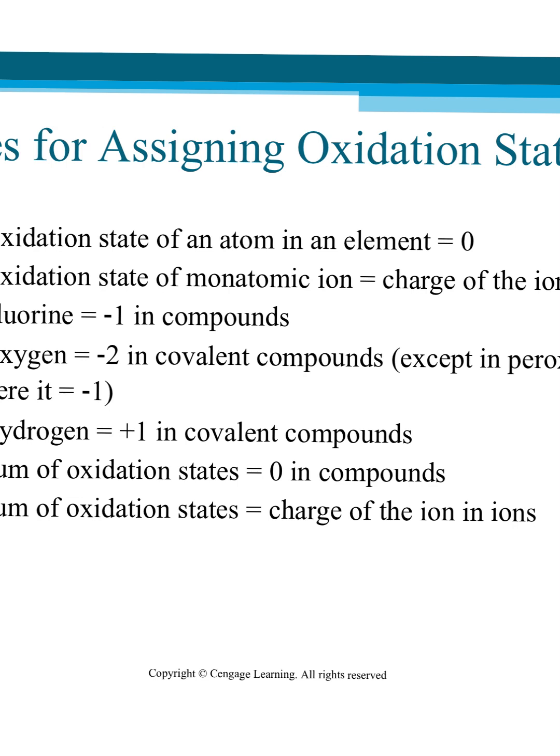If we have what's called a monatomic ion, that would mean we have something like this, Cl minus. And if we have a charge on an atom like that, that charge would also fall into the category of an oxidation number. We said oxidation numbers are kind of like charges. Well, if it has a full charge, therefore it is also its oxidation number. So it's showing us that this atom has one extra electron surrounding it.